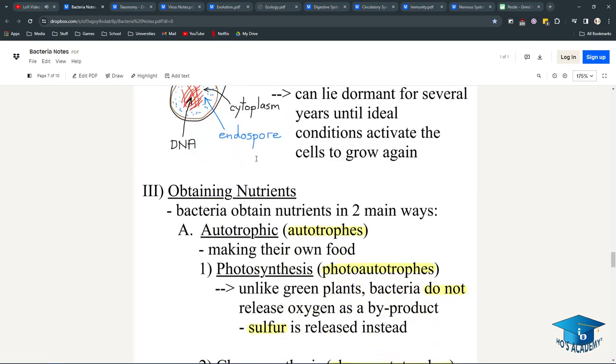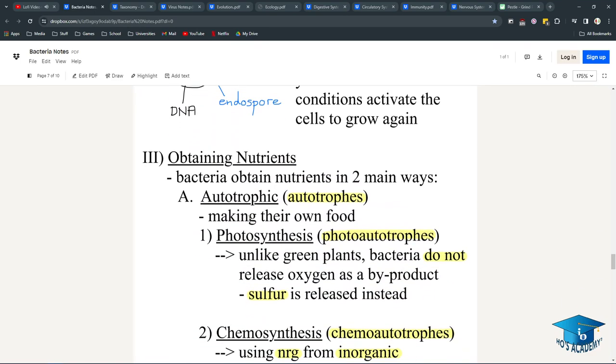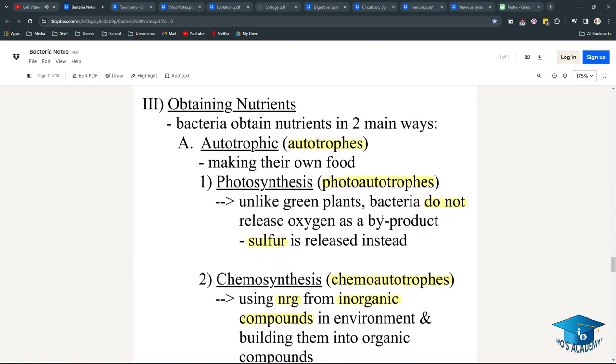Obtaining nutrients: Bacteria obtain nutrients in two main ways. They're either autotrophic, meaning auto means self, making their own food through photosynthesis as photoautotrophs. Unlike green plants, bacteria do not release oxygen but instead release sulfur, which isn't too healthy for us.